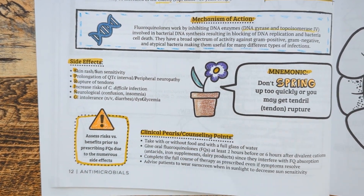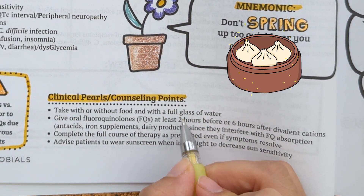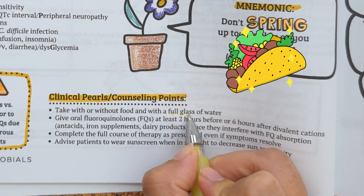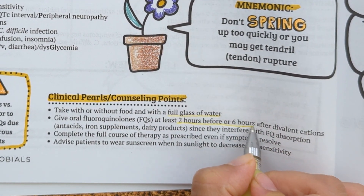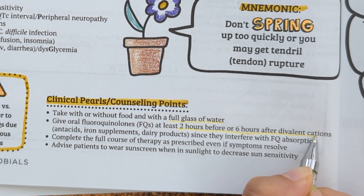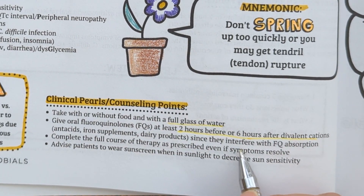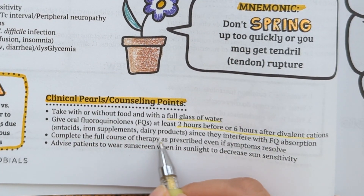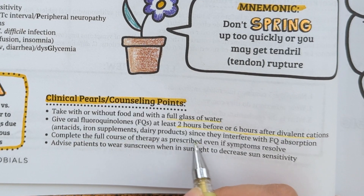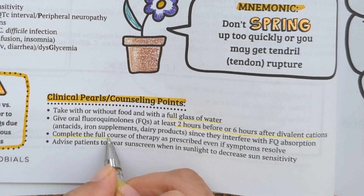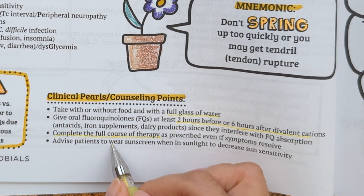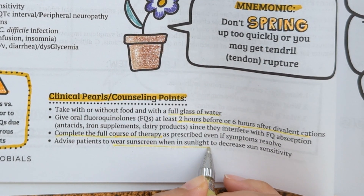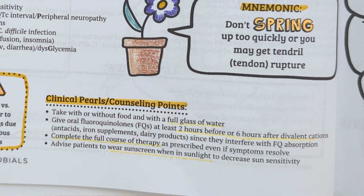Some counseling points to keep in mind: take this medication with or without food and with a full glass of water. Give fluoroquinolones at least two hours before or six hours after divalent cations such as antacids, iron supplements, and dairy products, since they interfere with fluoroquinolone absorption. As with all antibiotics, complete the full course of therapy as prescribed even if symptoms resolve. Advise patients to wear sunscreen to decrease sun sensitivity and sunburn.